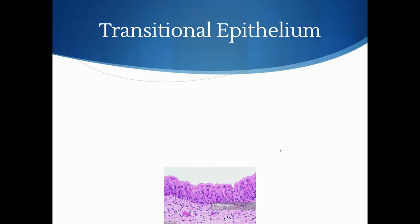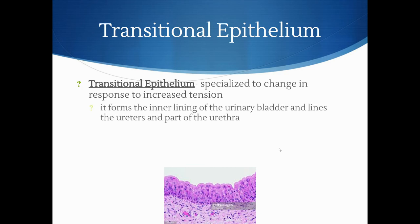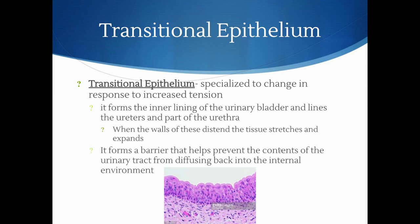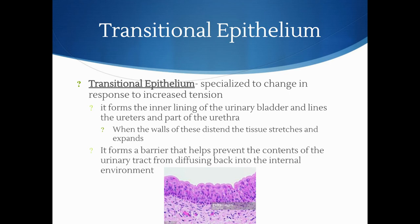Transitional epithelia is specialized to change in response to increased tension. These cells are special so that waste products do not diffuse back into the body. It forms the inner lining of the urinary bladder and lines the ureters and part of the urethra. When the walls are distended or stretched out, the tissue at the top layer stretches and expands, forming a barrier that helps prevent the contents of the urinary tract from diffusing back into the internal environment.